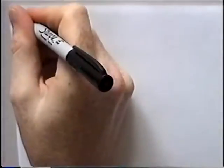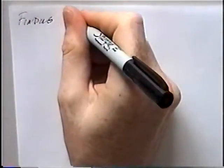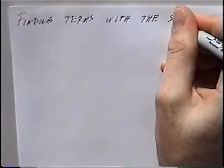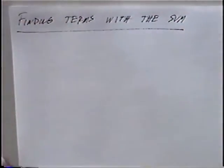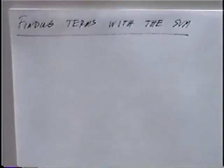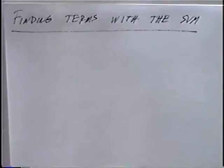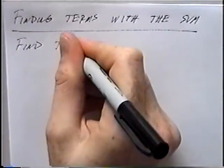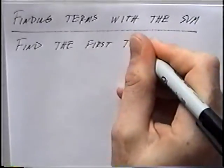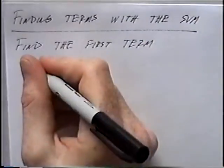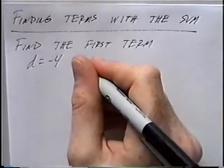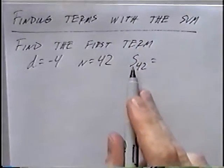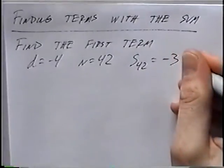The next section of notes is titled Finding Terms with the Sum. The only question for this section is to find the first term, given: d, the difference, is negative 4; n, the number of terms, is 42; and S sub 42, the sum of 42 terms, is negative 3,360.